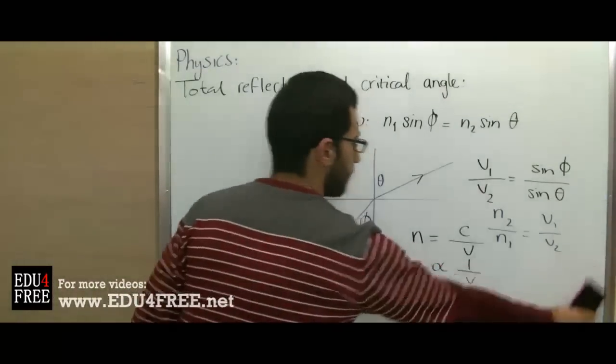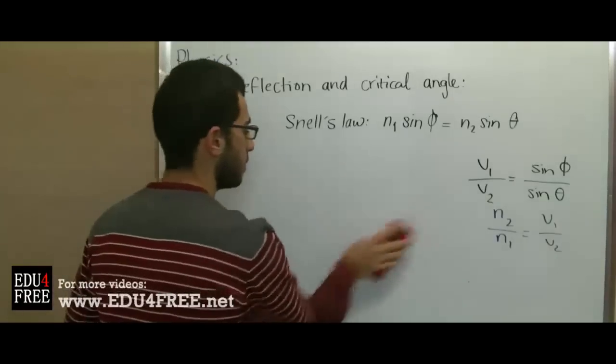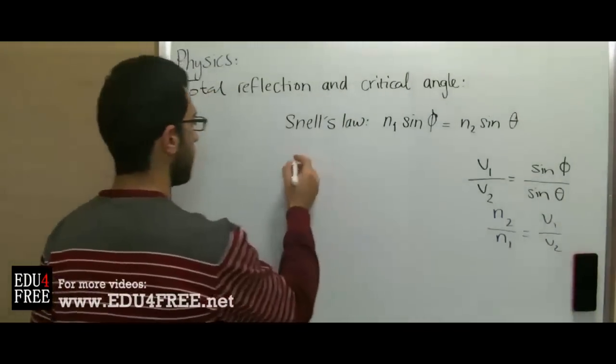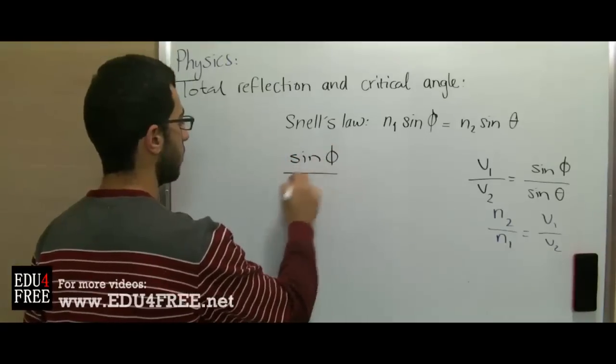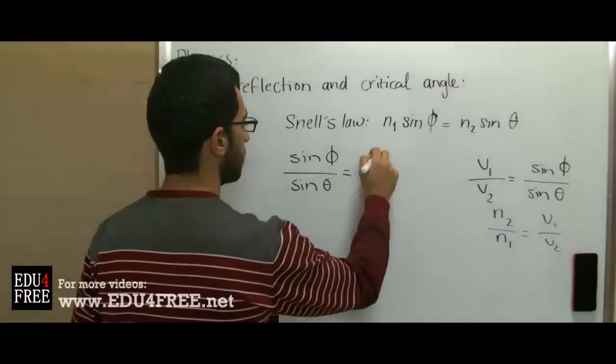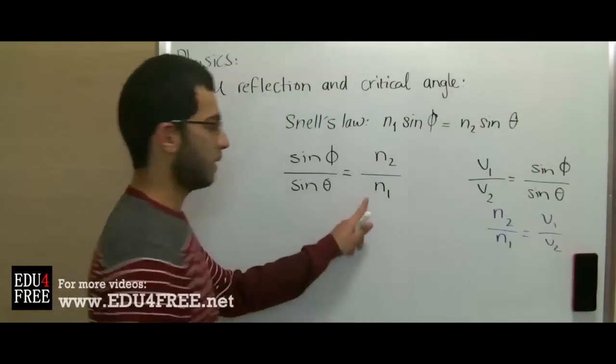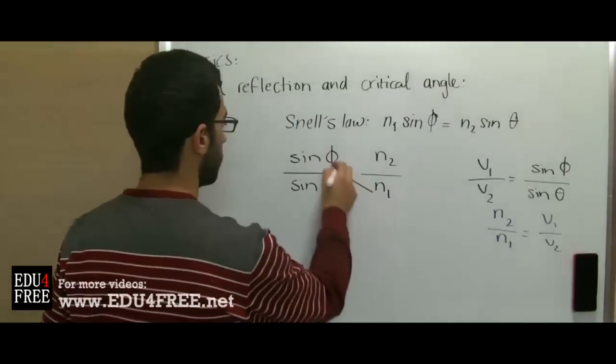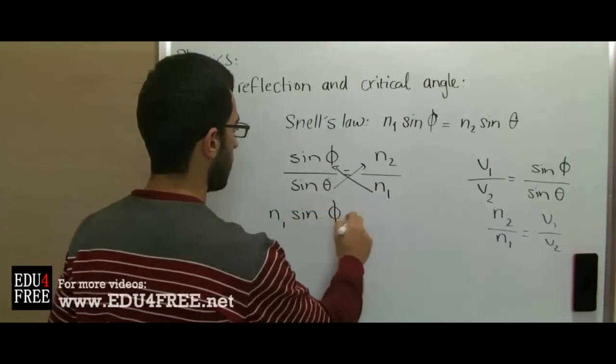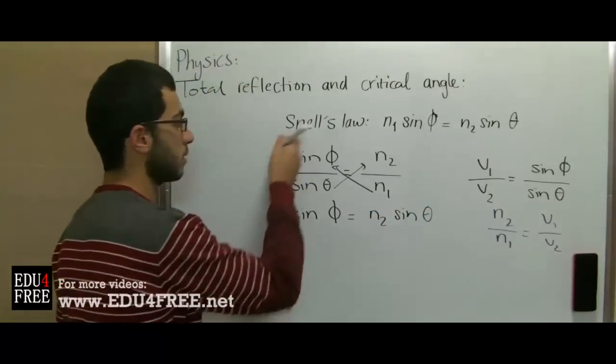From this, we can say that sine of the angle of incidence over sine of the angle of refraction equals the refractive index of the second medium over the refractive index of the first medium. By rearranging, we get n1 sin φ equals n2 sin θ. This is Snell's law.